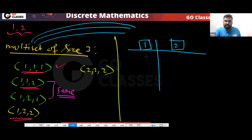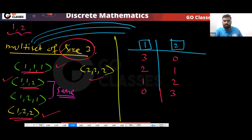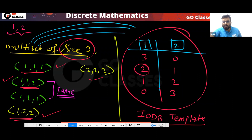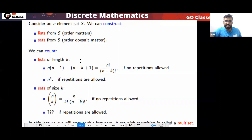For example, here I have taken three ones and zero twos, because I want a size-three multi-set. Or I take two ones and one two — that gives {1,1,2}. Or zero ones and three twos — that gives {2,2,2}. So you can clearly see the multi-set has the same template as IODB: how many ones you take and how many twos you take.